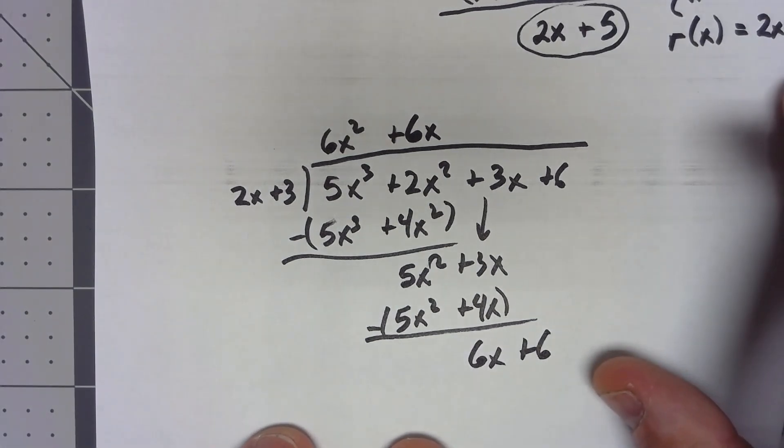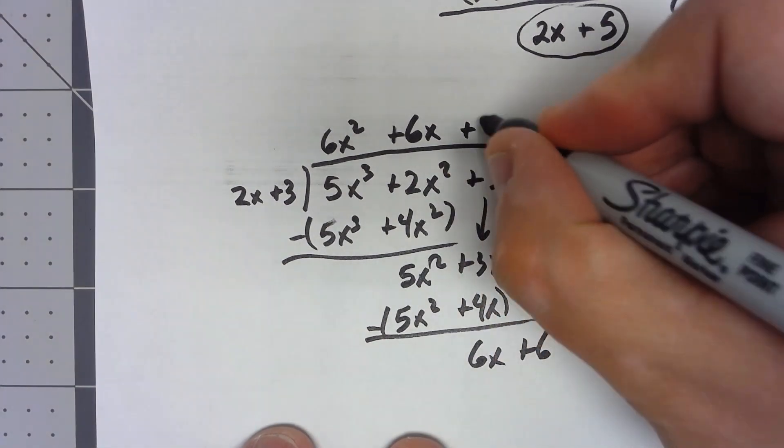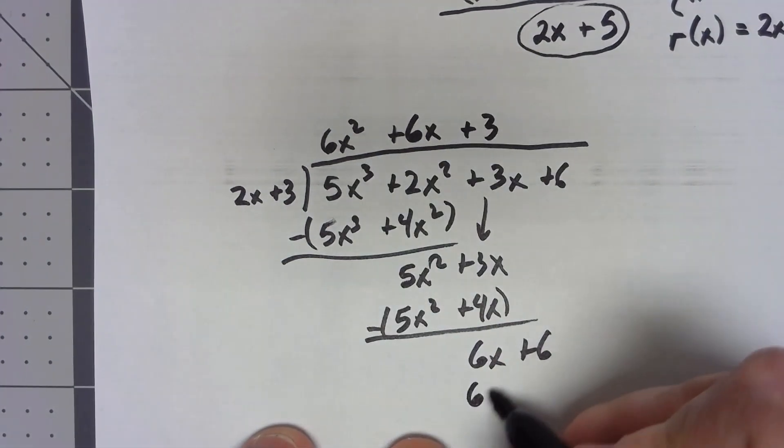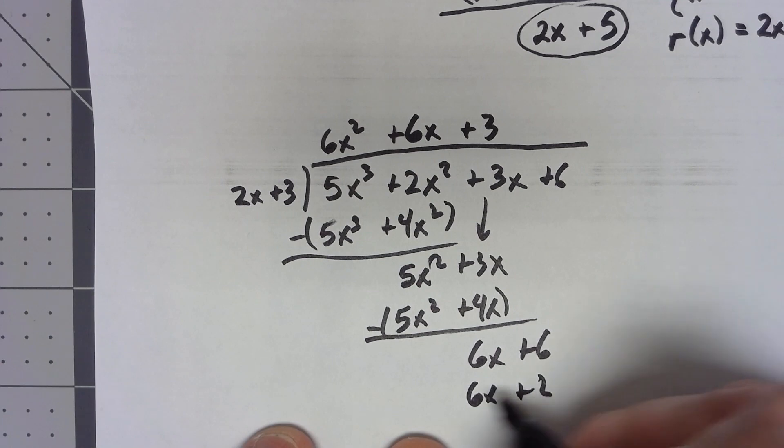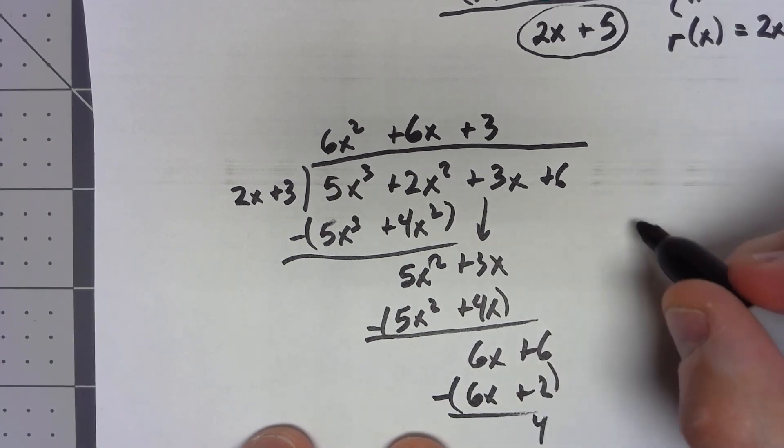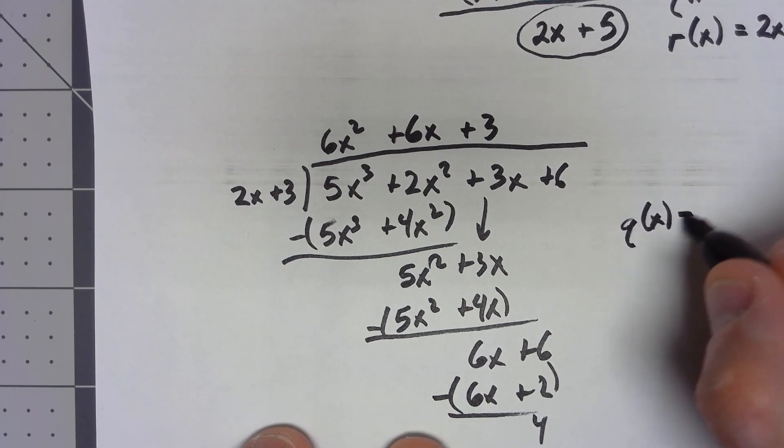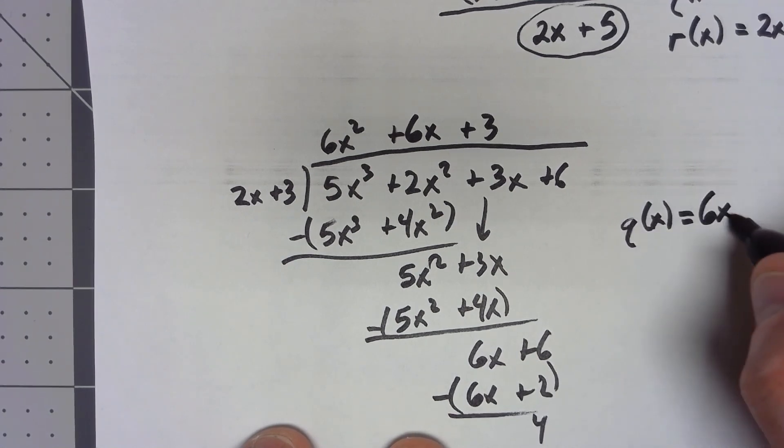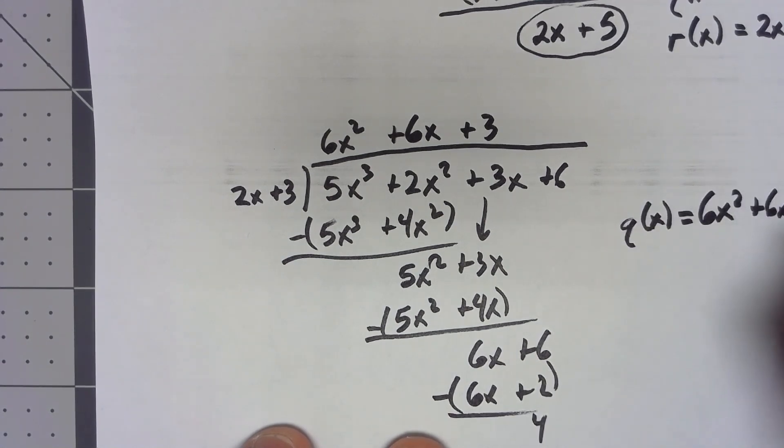3 times 2 is 6x. Plus 2. Subtract. We get 4. So, my q of x in this case is the 6x squared plus 6x plus 3, and the r of x is just equal to 4.